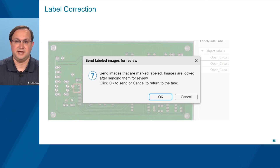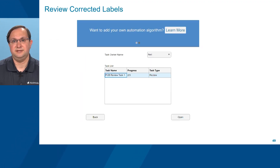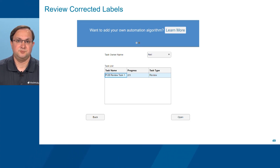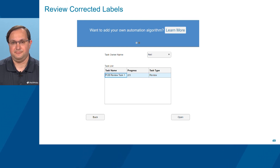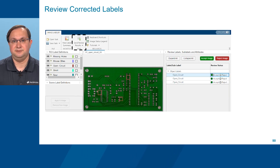After clicking on the Send Labeled Images icon, the Send Labeled Images for Review dialog box appears, and the corrected labels will be sent for review by clicking OK. To review the corrected labels, the review task owner launches the Image Labeler app, chooses task owner, and selects their profile. They proceed to reevaluate the labeling task now that the mistakes have been corrected. Since the correct labels have now been assigned, the review task owner accepts all three object labels using the Accept buttons and accepts the image itself using the Accept Image button, then resends the review results.